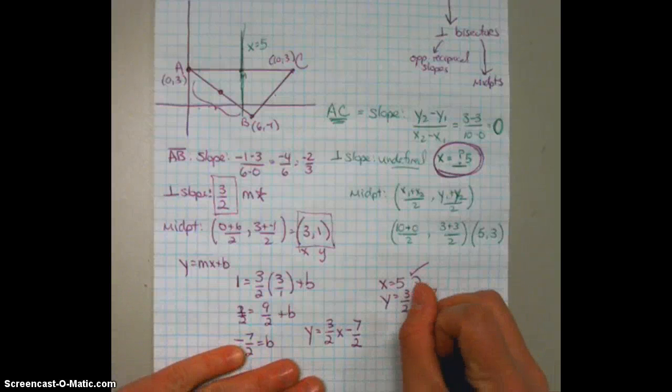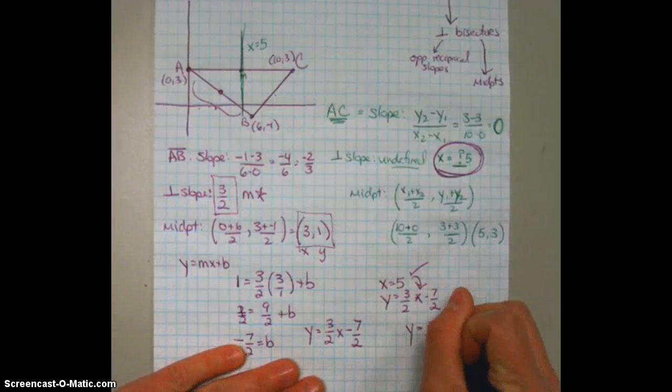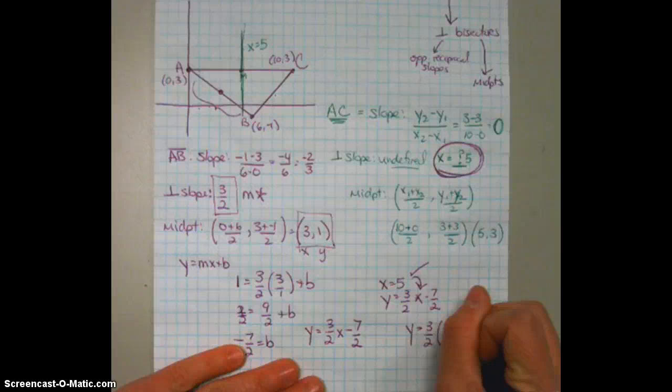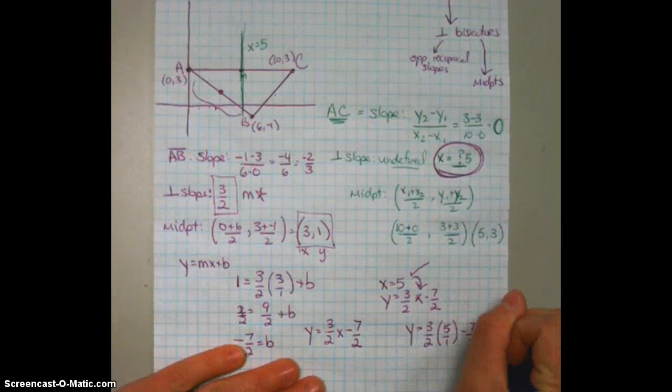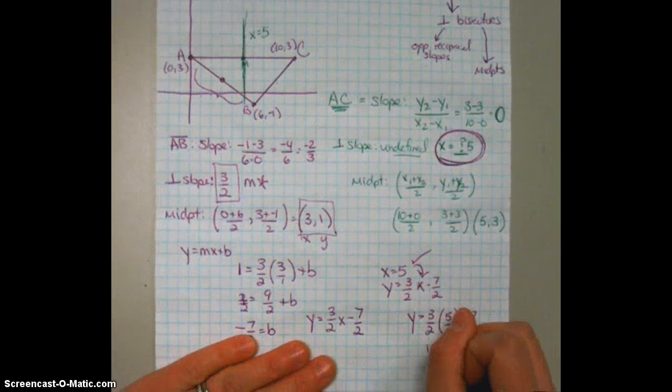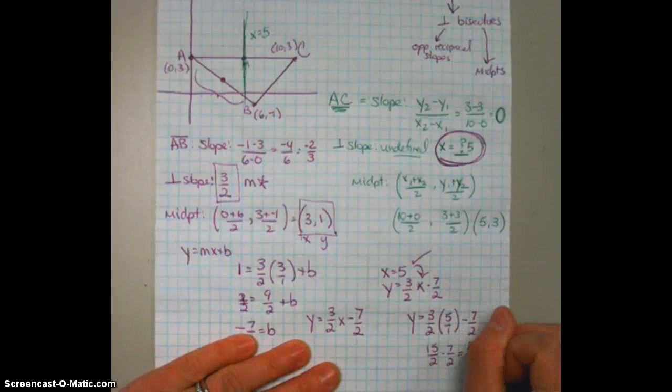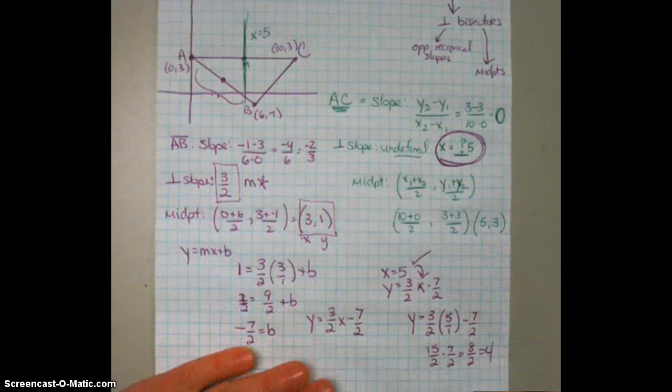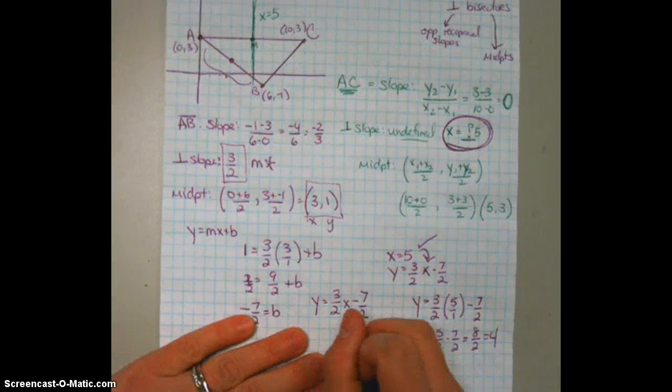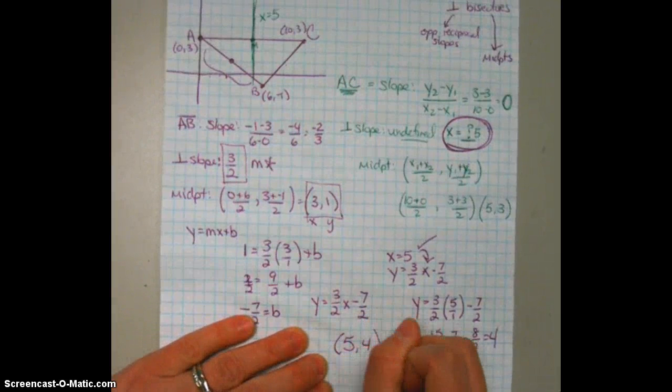So the y value is going to come from substituting in 5 in for that x. So substituting in 5, we get y equals 3 halves times 5 over 1 minus 7 halves. This is 15 halves minus 7 halves, which is 8 halves, which equals 4. Therefore, our circumcenter is at (5, 4).